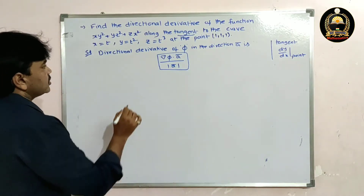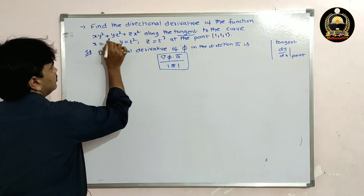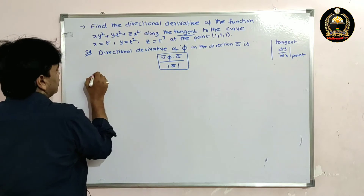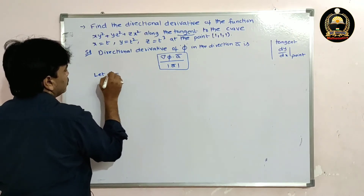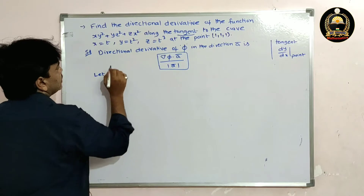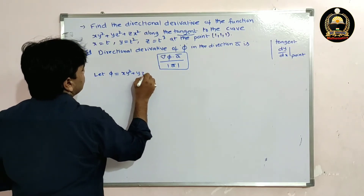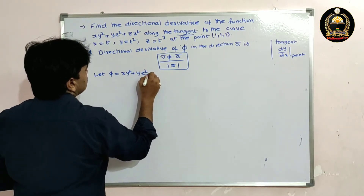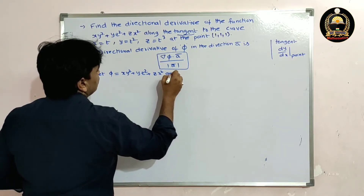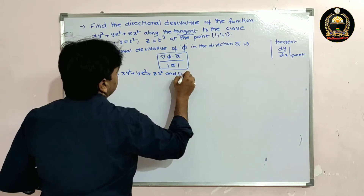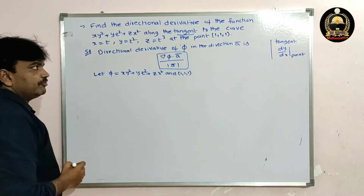Let φ = xy² + yz² + zx². The given point is (1, 1, 1).